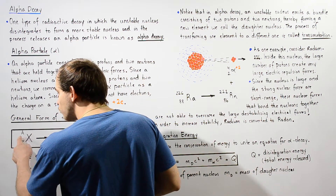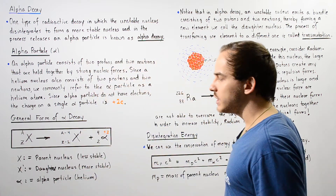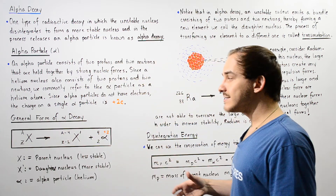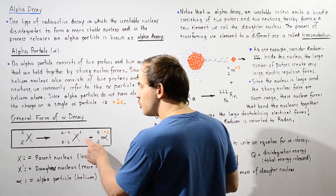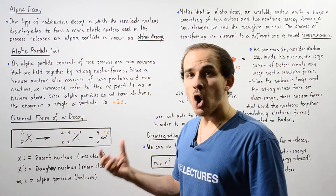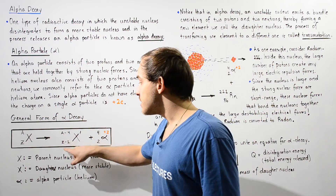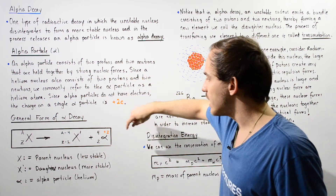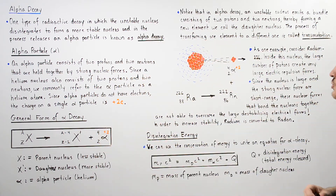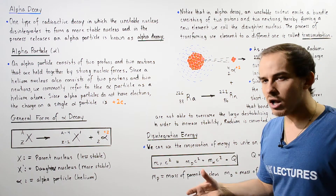Capital A represents the atomic mass — the sum of protons and neutrons — giving the number of nucleons in nucleus X, while Z designates the atomic number, the number of protons. When alpha decay takes place, the new element X prime loses a total of four nucleons, so its mass number is A minus 4, and its atomic number is Z minus 2. The alpha particle carries four nucleons: two protons and two neutrons.